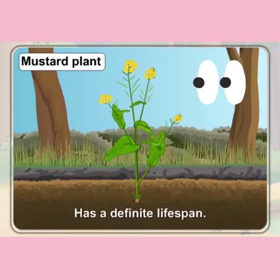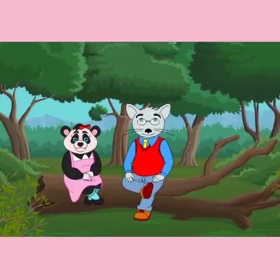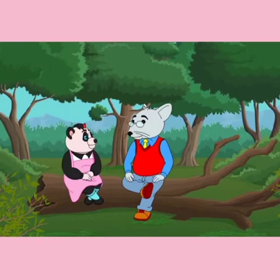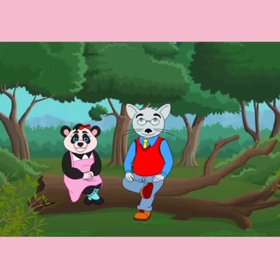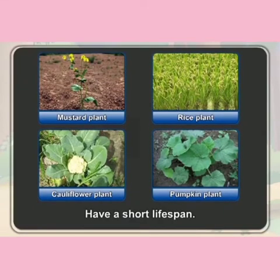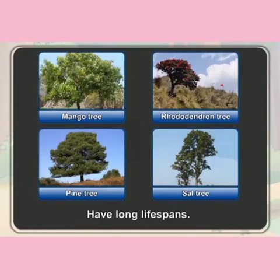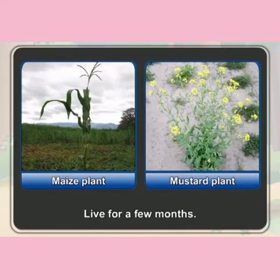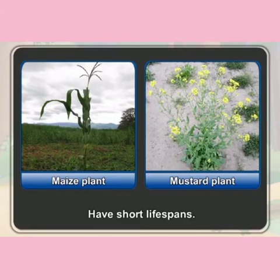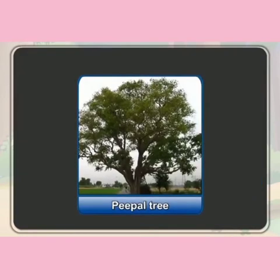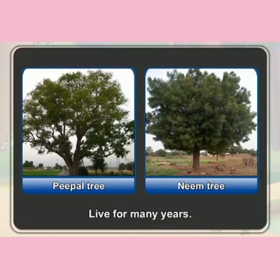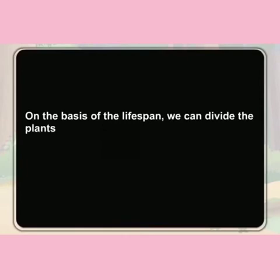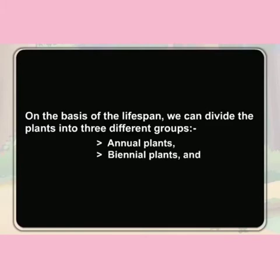A mustard plant has a definite lifespan. All plants have definite lifespans, but the lifespans differ. Plants like maize and mustard live for a few months, giving them a short lifespan. Trees like the peepal and neem live for many years, giving them a long lifespan. On the basis of lifespan, we can divide plants into three groups: annual, biennial, and perennial plants.